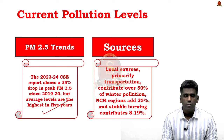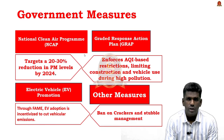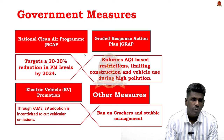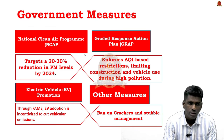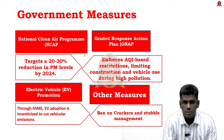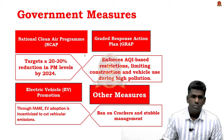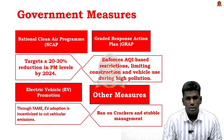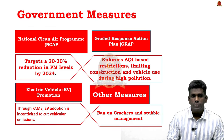Government measures to address winter air pollution include: the National Clean Air Programme (NCAP), which aims to reduce PM 2.5 and PM 10 levels by 20–30% by 2024; the Graded Response Action Plan (GRAP), which implements pollution control measures based on AQI levels — restricting construction, banning diesel generators, and imposing vehicle bans if air quality worsens; promotion of electric vehicles; ban on firecrackers; and efforts to curb stubble burning.